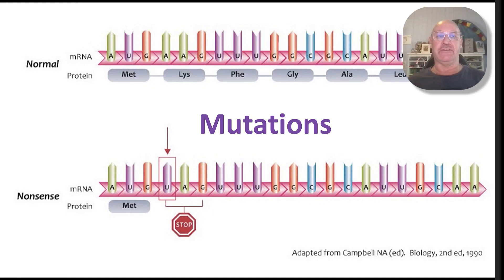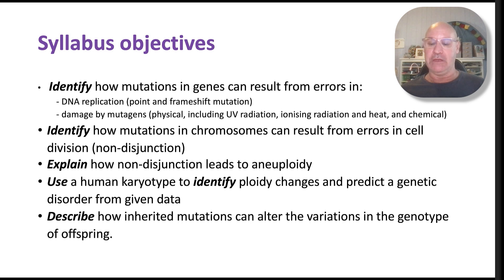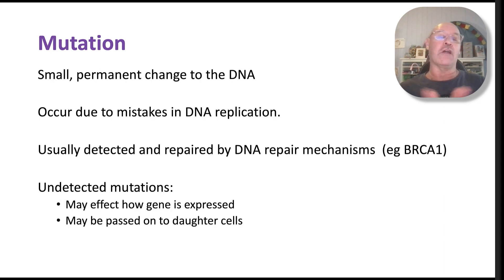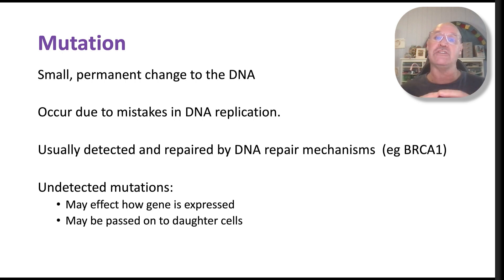Let's talk about mutations. These are the syllabus objectives — I'm going to put these up again at the end so you can check that you've covered them all. I'll also put up the syllabus guidance so you understand what you don't need to know. So, what is a mutation? It's a small permanent change to the DNA. We have mutations of genes and mutations of chromosomes, and we're going to look at both of those separately.